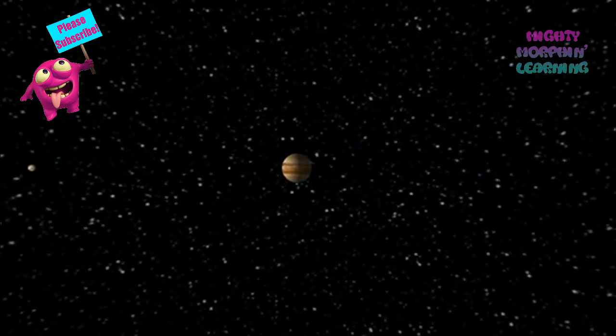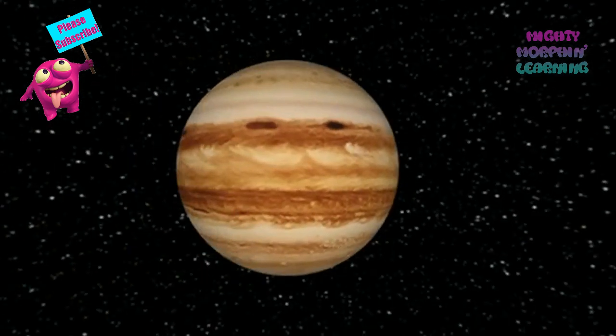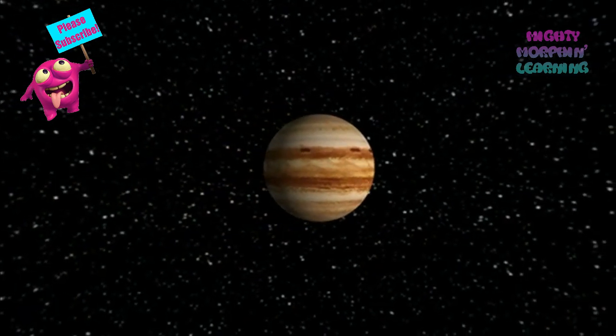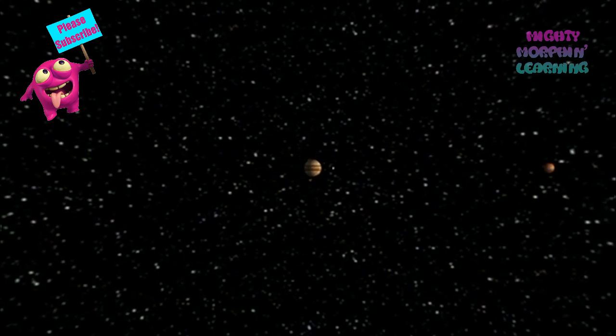After Mars comes Jupiter, which is the largest planet in our solar system, and is big enough to hold 1,300 Earths. Because of its larger size, if you weigh 100 pounds on Earth, you would weigh 236 pounds on Jupiter.